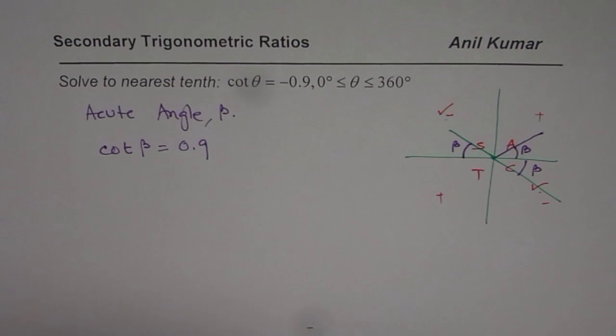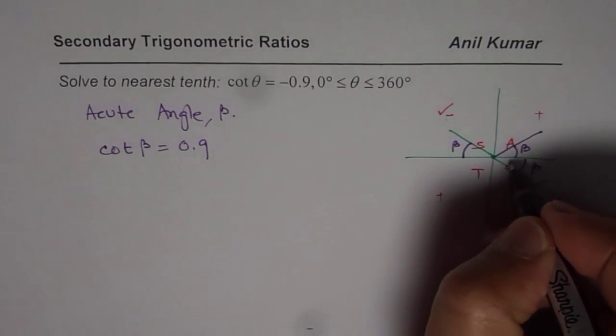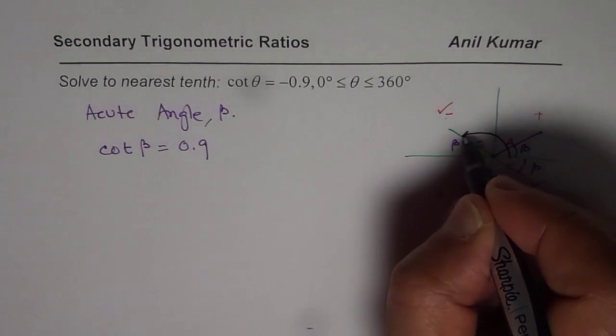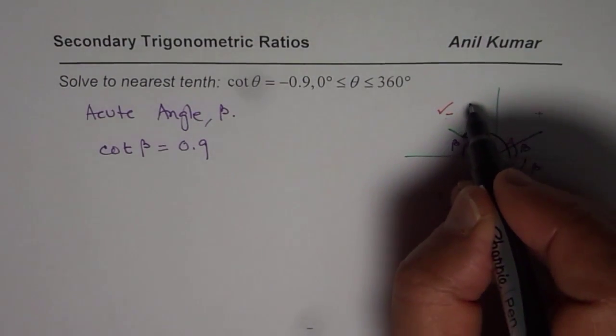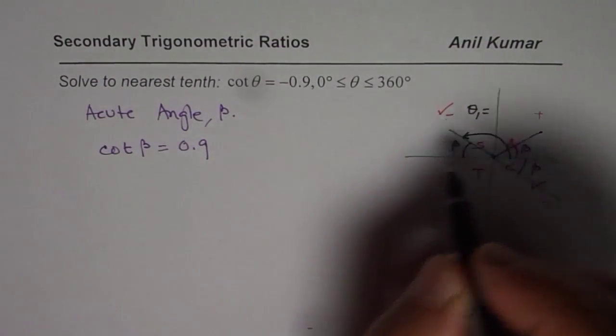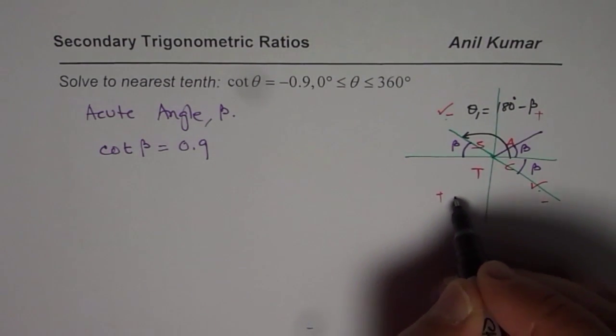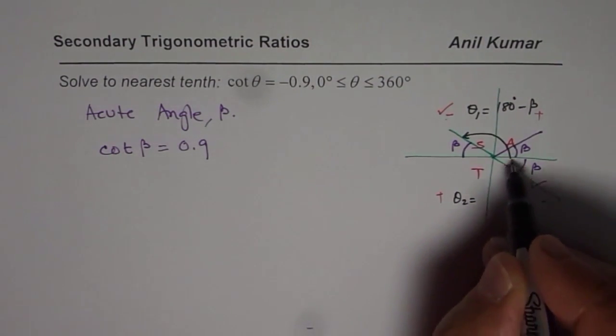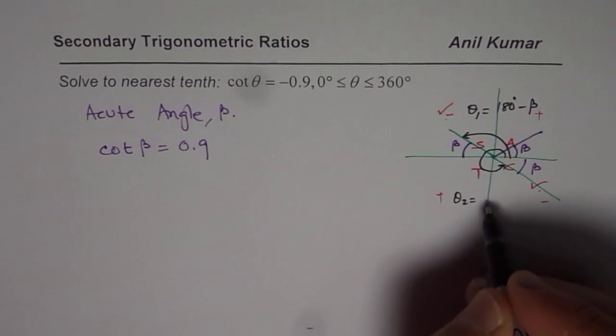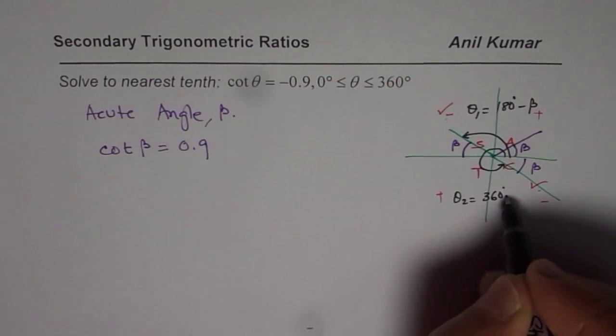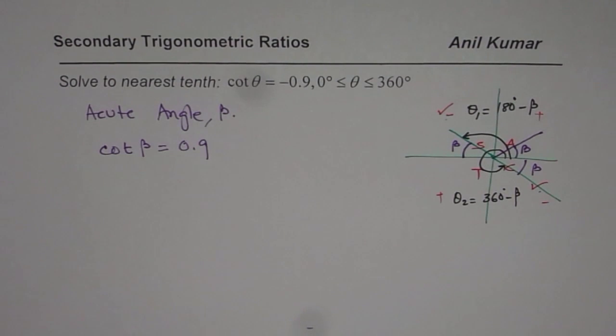So the answer for us will be, one is this. That is to say, one θ will be equals to 180 degrees minus β. The other angle will be θ₂, which will be that much, 360 degrees minus β. So that is the kind of strategy. I hope that is absolutely clear.